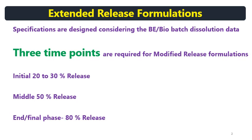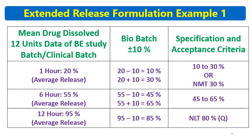The minimum requirement is 3 time points, and based on the formulation, more time points can be added — you can go for 2 middle time points as well. Now let's have a practical example. Consider a conventional ER formulation with drug release over around 12 hours. The dissolution specifications are based on the drug release studied with the bio batch — mean drug dissolved from 12 units is used as the dissolution data to make the specifications.